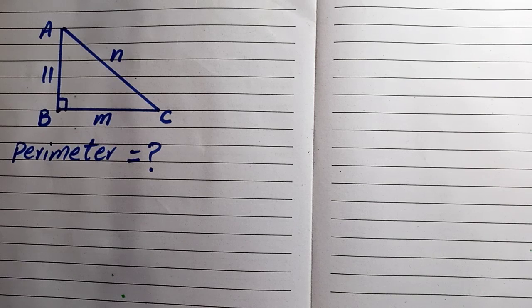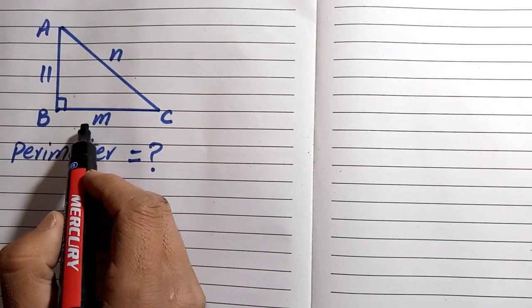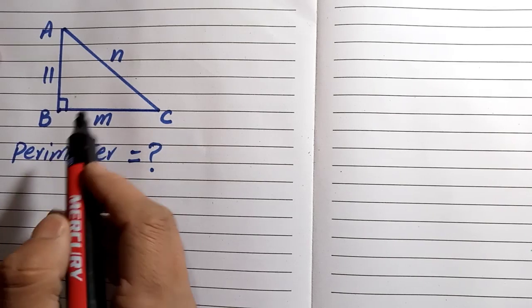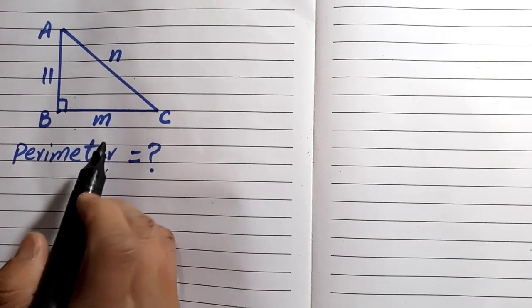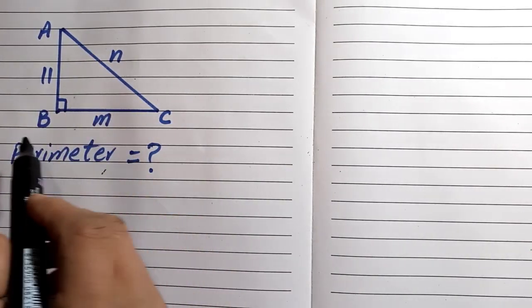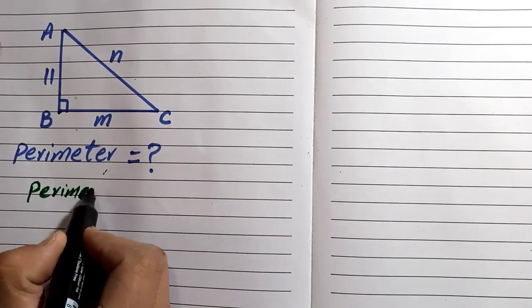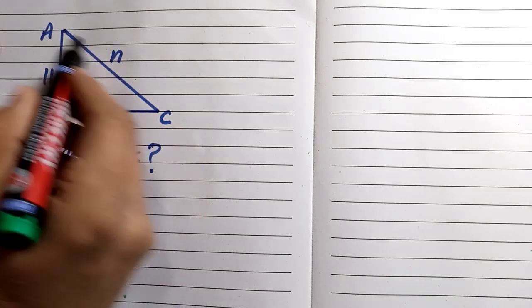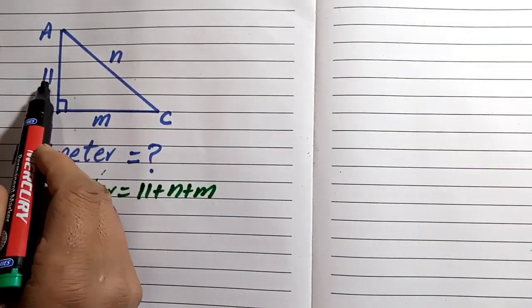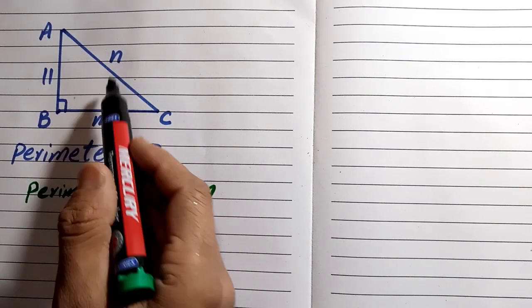Hello everyone, welcome to another math geometric Olympiad problem. In this problem we find the perimeter of a right triangle. The perimeter is the sum of all boundaries of any triangle, square, or rectangle. For this right triangle, the perimeter will be equal to 11 plus n plus m, where one side is 11 and the other two sides are the variables m and n.